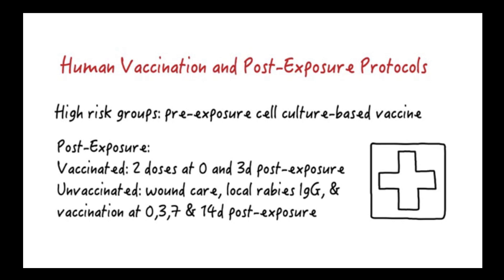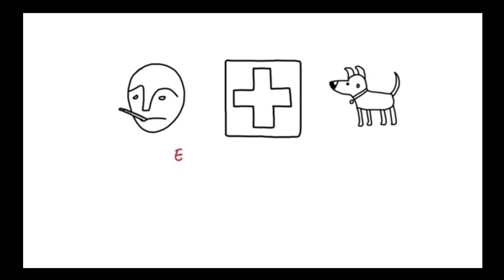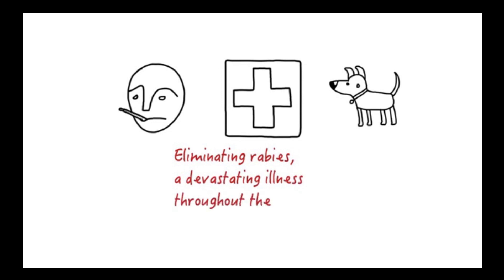If an unvaccinated person is bitten by a rabid animal, recommended treatment consists of wound care, infiltration of rabies immune globulin, and vaccine administration on days zero, three, seven, and fourteen post-exposure. Timely post-exposure prophylaxis virtually assures human survival. The preventative vaccination approach represents a one-health approach to disease control, leading to simultaneously better health outcomes for animal and humankind, as prevention in common vector species is crucial.